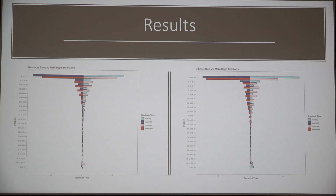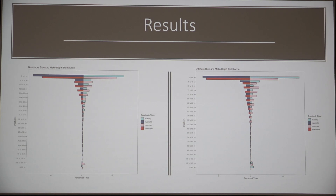Here we have the depth distributions of four double-tagged blue and six double-tagged mako sharks, separated into near and offshore zones. On the y-axis I have depth binned every five meters down to 200 meters, and on the x-axis I have percent time. Night is indicated by dark bars and daytime by light bars — blue sharks in blue, mako sharks in red. Both species, near and offshore, are concentrated in the top 10 meters of the water column, decreasing down to about 100 meters. Once offshore, less time is spent at the surface but sharks typically remain above 50 meters. As hypothesized, blue sharks spent more time than makos below 200 meters, which could be indicative of more hypoxic-tolerant characteristics.